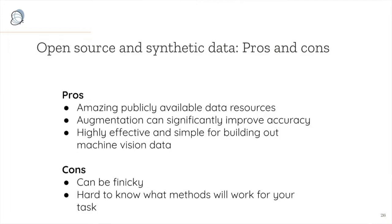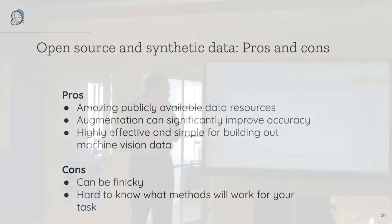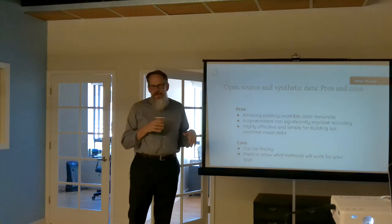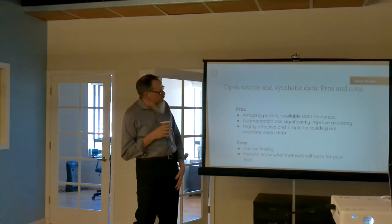Pros and cons of finding or generating data: we're living in a golden age of data, and you can find data on just about anything. Data augmentation significantly improves accuracy almost all the time and can be very effective and simple for machine vision datasets. The cons are it can be finicky — the cut-and-paste approach can be hard to make work in practice — and it's sometimes hard to know which methods will work well for your particular task. It takes a lot of trial and error.